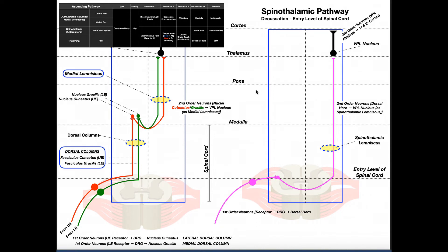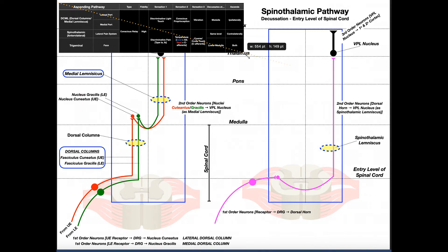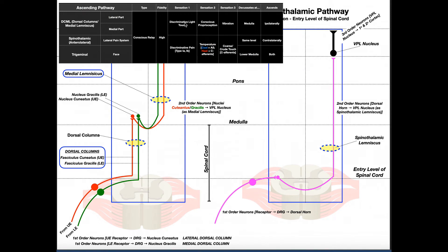What information is relayed by the spinal thalamic pathway? Just like the DCML pathway had three types of sensation, the spinal thalamic also has three: discriminative pain, temperature sensation, and coarse and crude touch. For temperature, it depends on whether it's cool or hot. Cool is transmitted by A-delta fibers, which are somewhat myelinated and slightly larger. Heat is transmitted by C-afferent fibers, which are completely unmyelinated. Temperature is sensed by the spinal thalamic pathway.